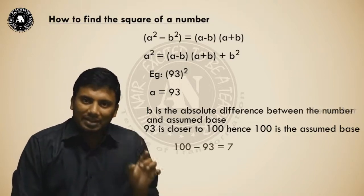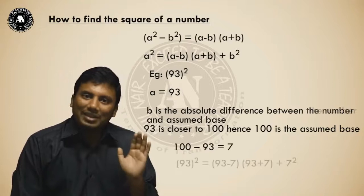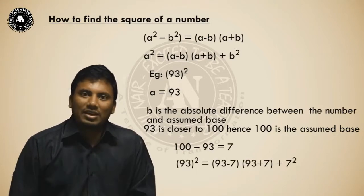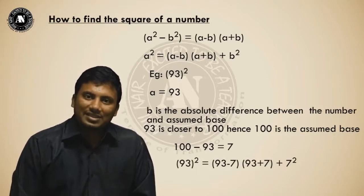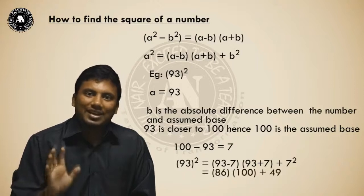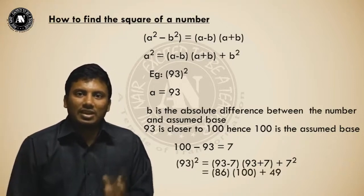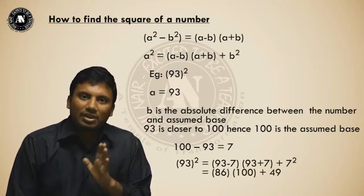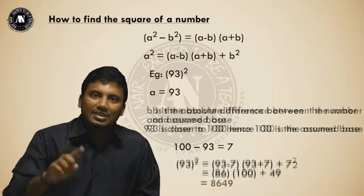So, this will become (93-7)(93+7) + 7². 93 minus 7 is 86. 93 plus 7 is 100. 7 square is 49. 86 into 100 plus 49. What is the answer? 8649.